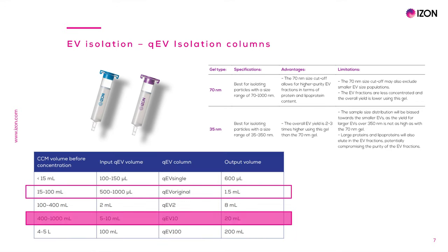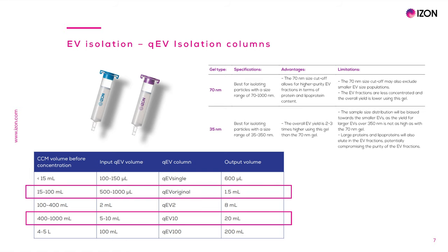There are different QEV columns suitable for different CCM input volumes. For example, for 500 ml of starting CCM concentrated 50 times to 10 ml, a QEV 10 column would perfectly suit the sample volume, resulting in approximately 20 ml of collected pure EV-rich volume. For 50 ml of starting CCM concentrated 50 times to 1 ml, a QEV Original would suit the sample volume, resulting in 1.5 ml of collected pure EV-rich volume.